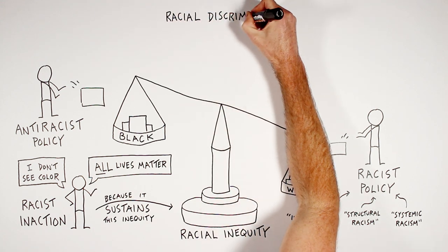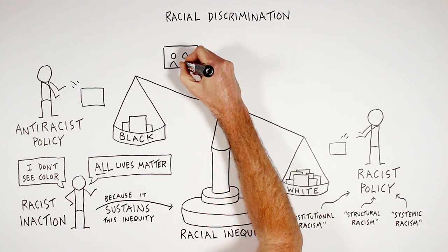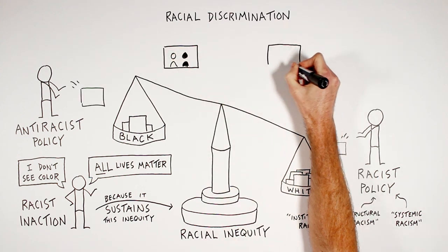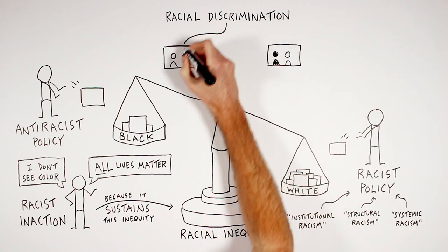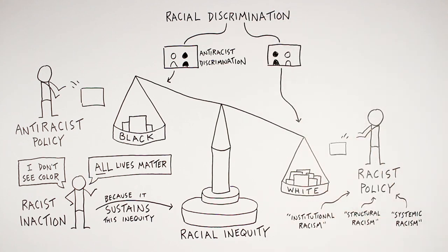From there, Kendi goes on to talk about racial discrimination. When defined as treating, considering, or making a distinction in favor of or against an individual based on that person's race, racial discrimination is not inherently racist. The defining question is whether that discrimination is creating equity or inequity. If it's creating equity, then it's anti-racist discrimination. If it's creating inequity, it's racist discrimination. This makes sense because if we treat every single person exactly equally all of the time, nothing about this current state of inequity is going to change.